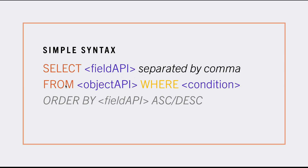FROM is basically saying what object do I want to pull those fields from. So obviously if you are using Account, you put Account here. Again, this is also the API name — most things in SOQL are API names, so you always want to go to your Object Manager and make sure you're using the right API name.